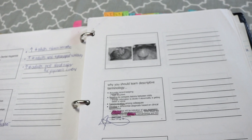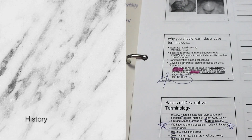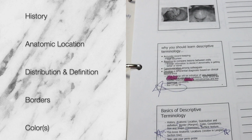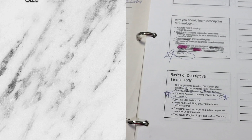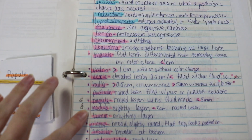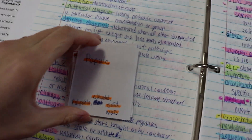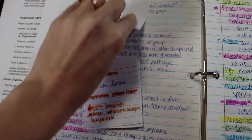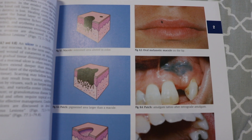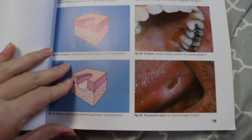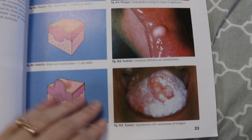Whenever we're talking about pathology, we have to know the descriptive terminology to be able to correctly identify it. We have to know the history, the anatomic location, the distribution and definition, if they have any borders, the color, consistency, shape, texture, and size — we have to measure everything. These are just some of the different words we would use to describe certain types of pathology, and I have note cards so I can quiz myself on everything. Here are some examples of the different descriptive terminology and what it looks like.